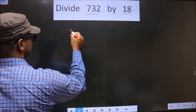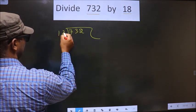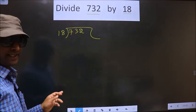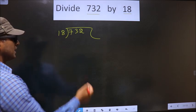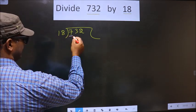See, that is 732 divided by 18. Okay, next. Now here we have 7. 7 is smaller than 18.